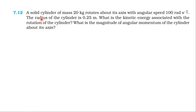From NCERT book, from the topic System of Particles and Rotational Motion, example 7.12: A solid cylinder of mass 20 kg rotates about its axis with angular speed 100 radian per second. The radius of the cylinder is 0.25 m. What is the kinetic energy associated with the rotation of the cylinder? What is the magnitude of angular momentum of the cylinder about its axis?